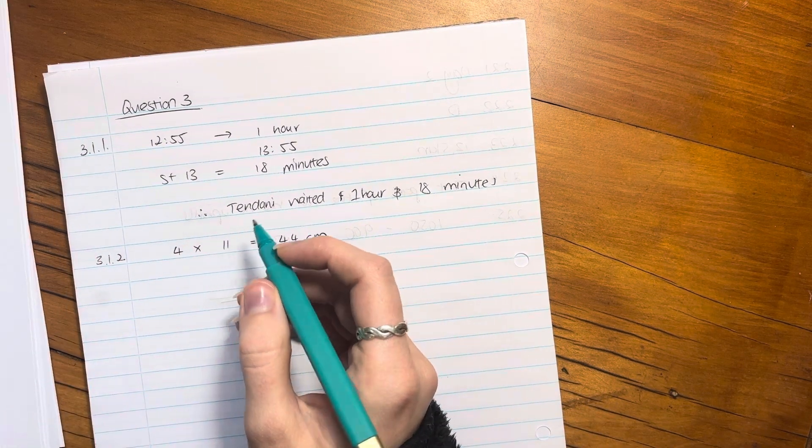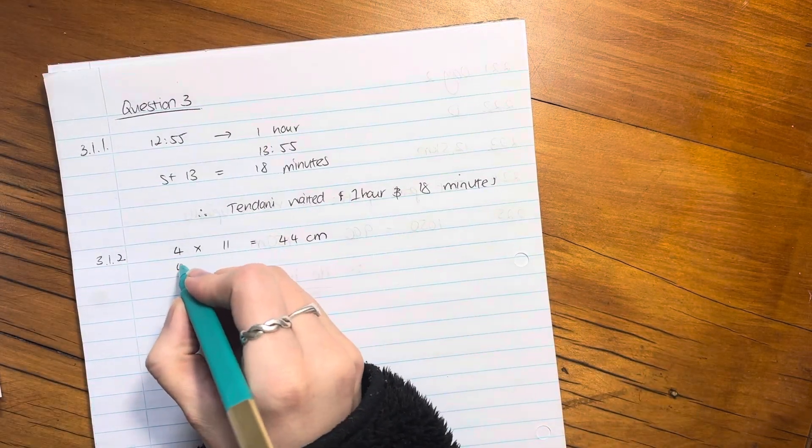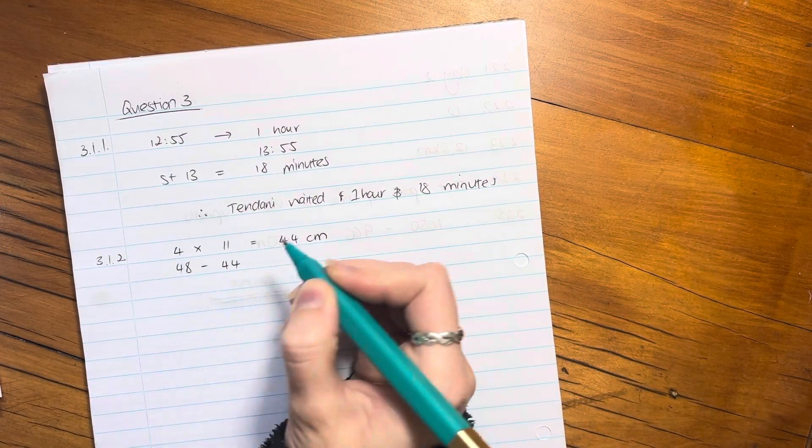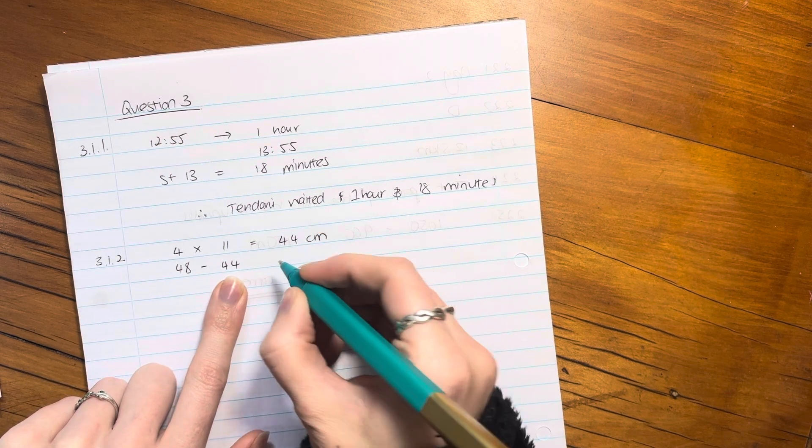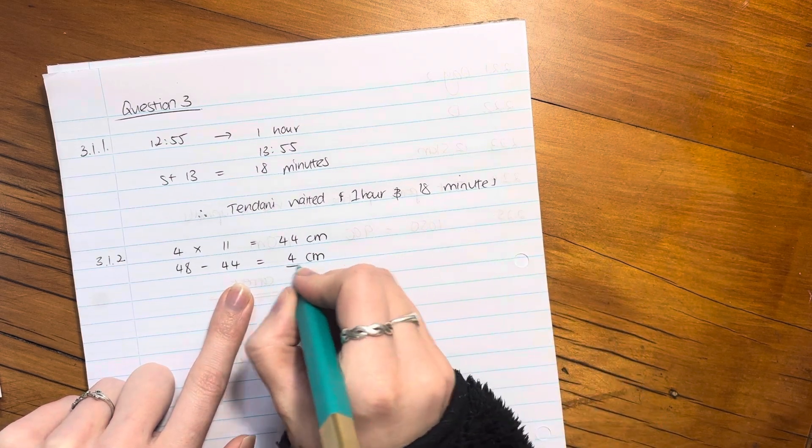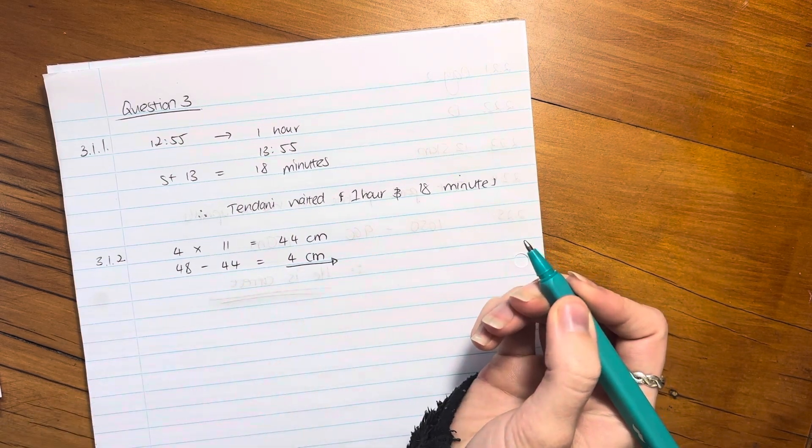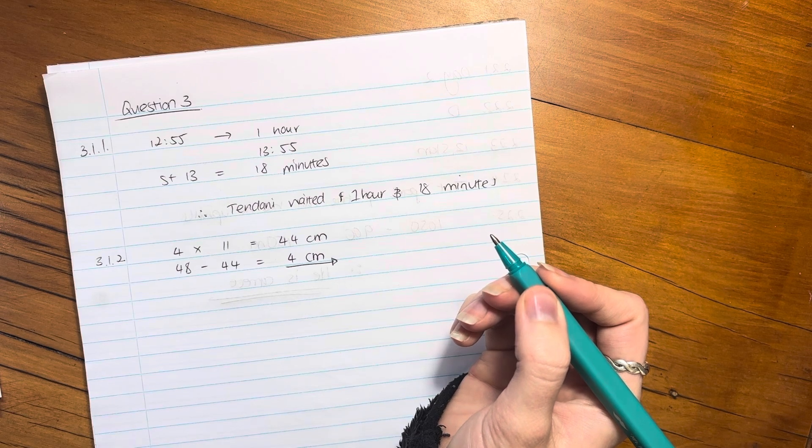But we know that the total height of the bag is 48 centimeters. So you have to say 48 minus 44 because 48 is how high it is and 44 is how many centimeters the bags take. And so it is 4 centimeters. So that's the difference there. There's other ways of doing it. That to me is the simplest way.